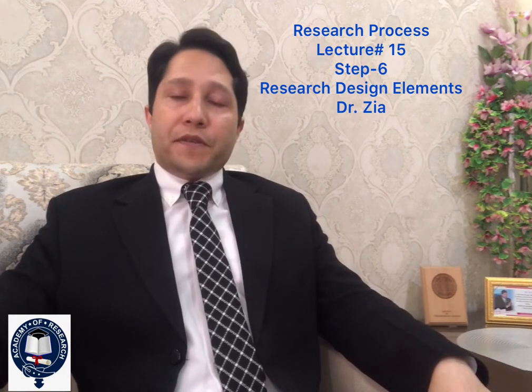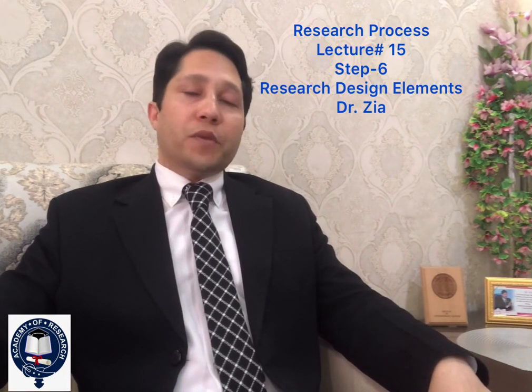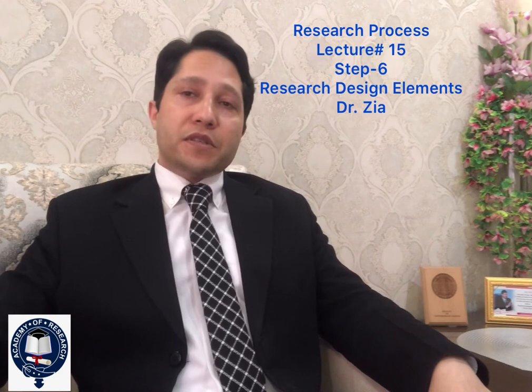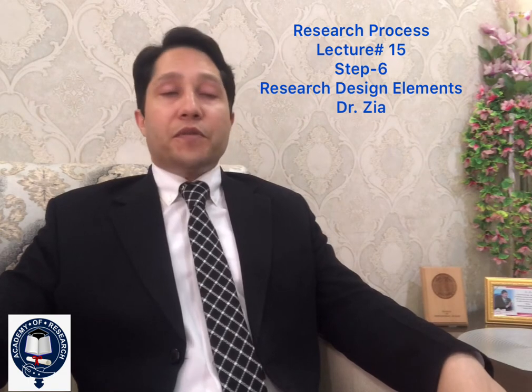Number two is type of investigation — the second element of research design. The type of investigation can be either causal or correlational. Most of the time in social sciences, we conduct correlational analysis. A causal study is conducted where you control some aspect of the environment.